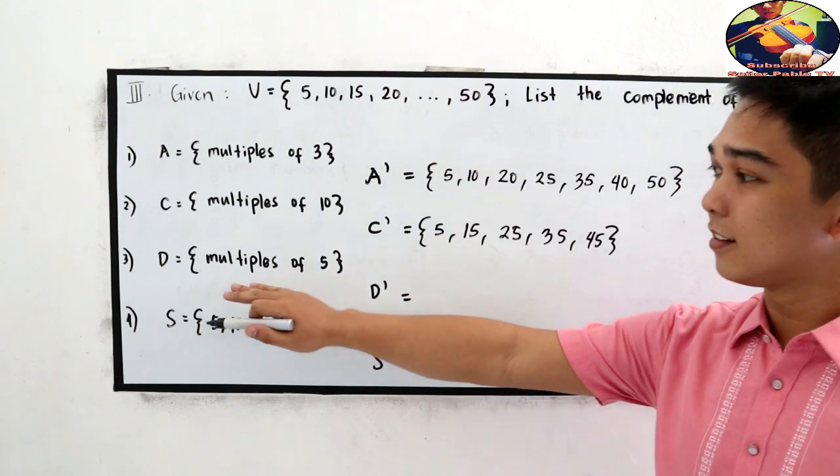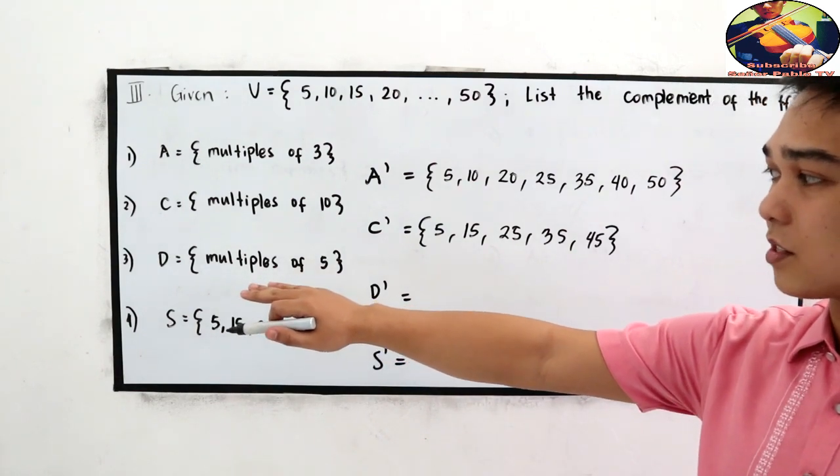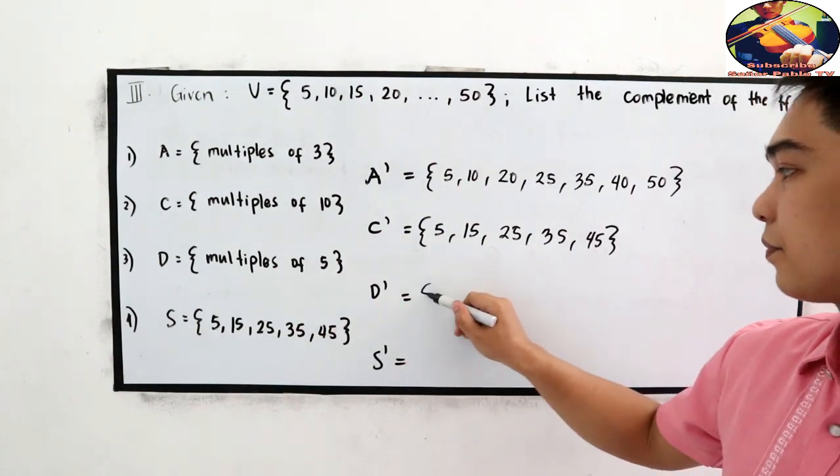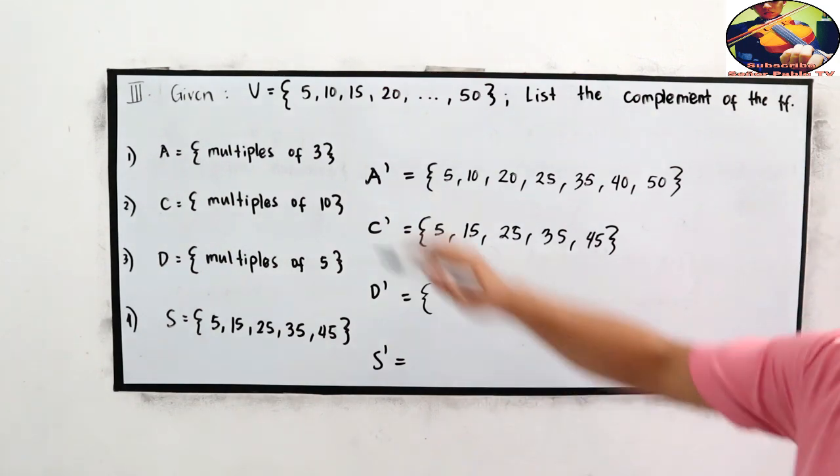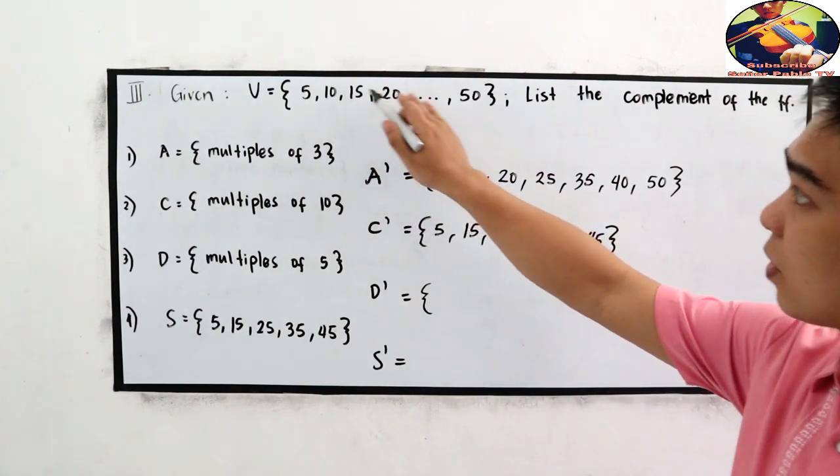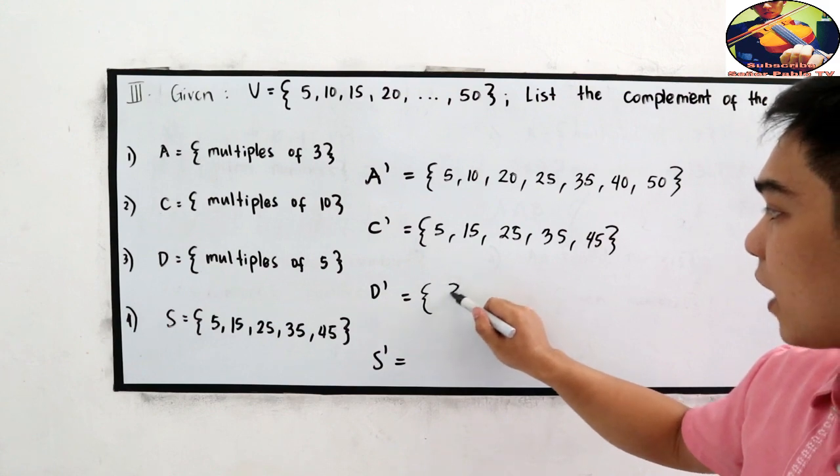Number three, D or set D is a multiple of five. So obviously, our given is a multiple of five. So this is empty set.